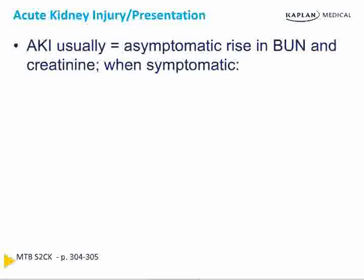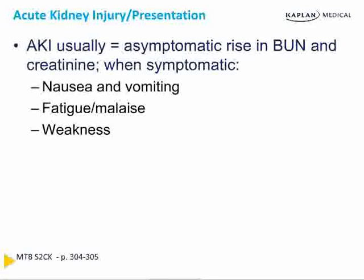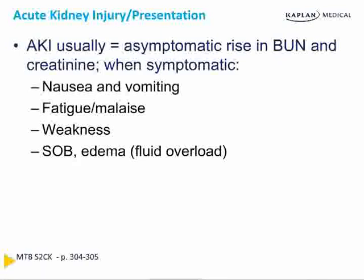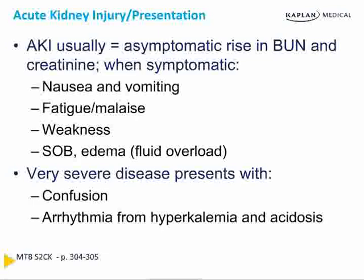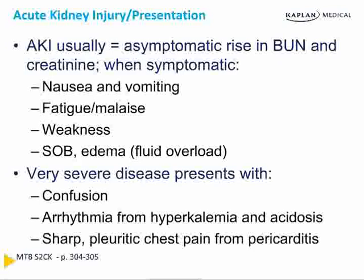AKI, regardless of etiology, is typically a diagnosis made by laboratory values rather than patient complaints. Traditional symptoms include nausea and vomiting, fatigue, malaise, weakness, or symptoms of volume overload like shortness of breath or edema. Other presenting symptoms are cause-specific. If AKI is very severe, the patient may present with confusion from uremic toxins, arrhythmia from hyperkalemia and acidosis, and sharp pleuritic chest pain worse with inspiration — characteristic of uremic pericarditis.